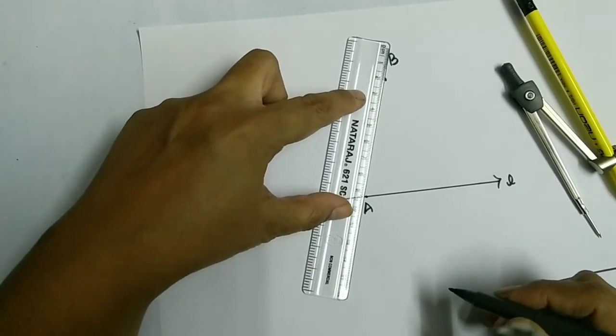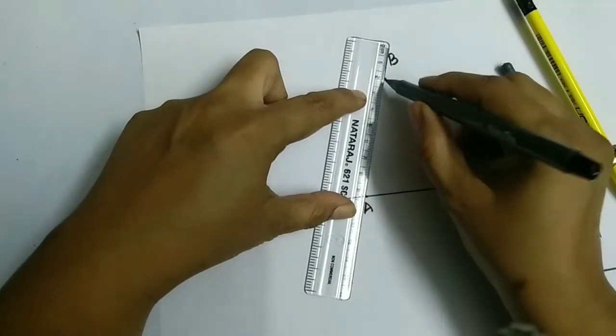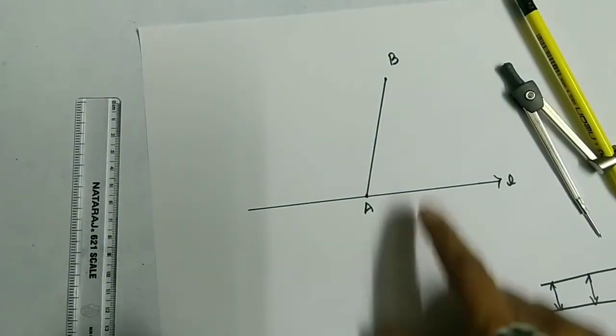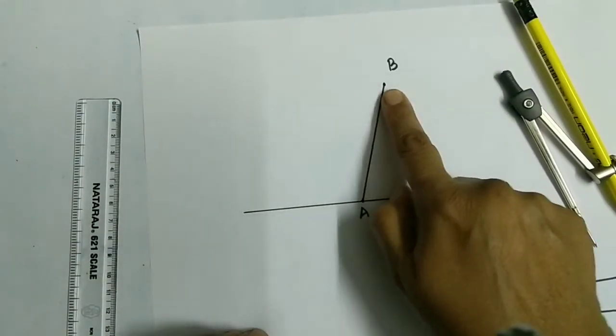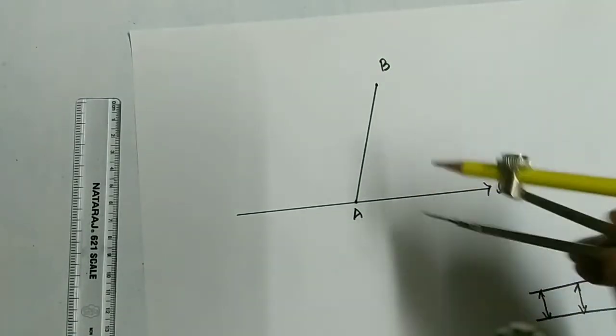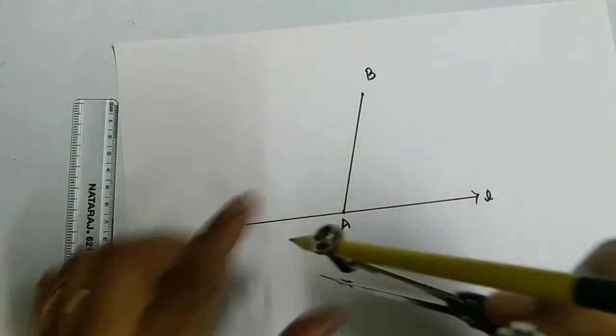We need this to draw the parallel line, and that parallel line is going to pass through point B. For that, I'm using this compass. Draw an arc here with any radius you want. Just fix it and draw an arc here.